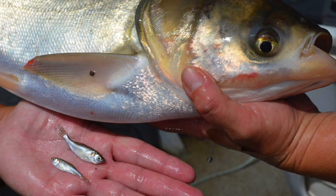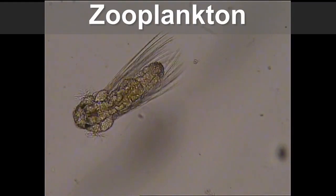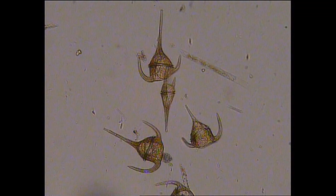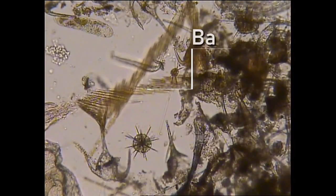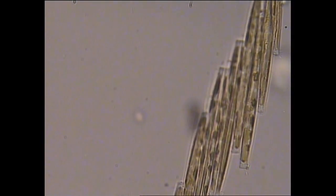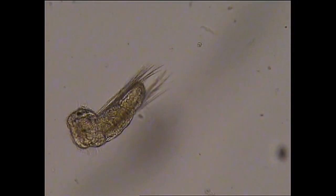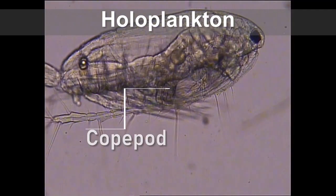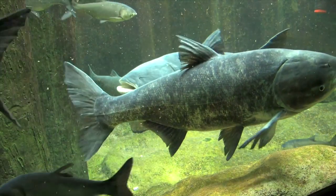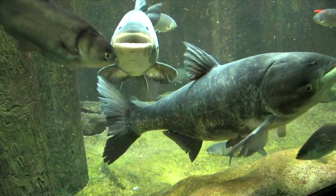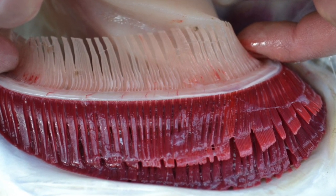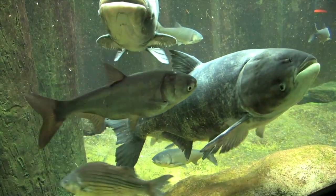Young bighead carp are known to predate on zooplankton such as rotifers or copepods, but will also switch to phytoplankton if needed. Silver carp predate mainly on phytoplankton — small, typically photosynthetic organisms that form the base of many freshwater ecosystems. Zooplankton are tiny organisms that feed on phytoplankton and also play a necessary role in a freshwater ecosystem's food chain. To feed, invasive carp swim through the water column and pump-filter river water through their gill rakers, which sieve and trap food particles of certain sizes for consumption.